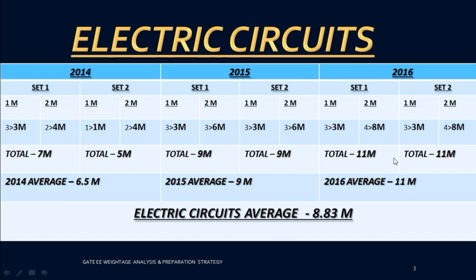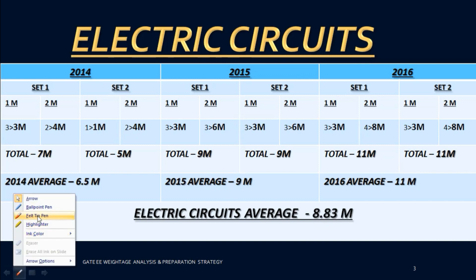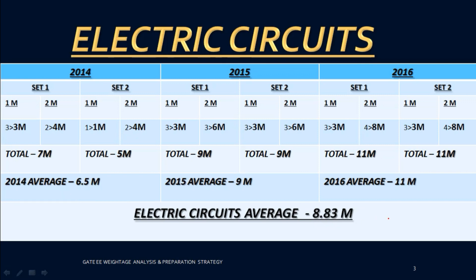In Set 2 it was five marks; 2015 Set 1 was nine marks, and Set 2 was eleven marks. The 2014 average was 6.5 and the overall Electric Circuits average comes to about 8.83. Therefore this year we can expect around eight to nine marks — it carries great weightage and we should concentrate on this subject.